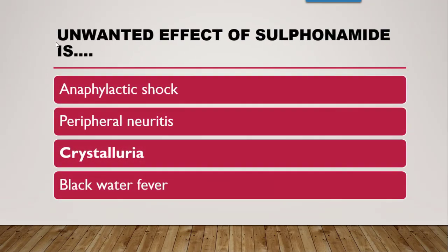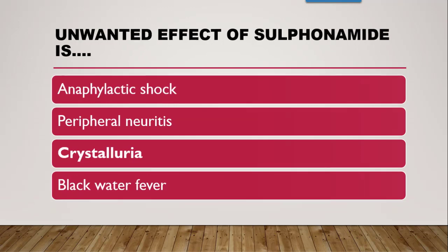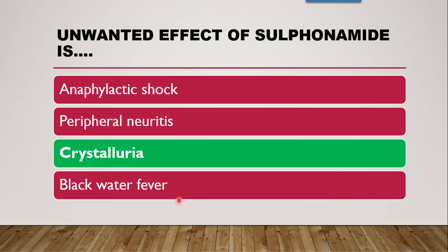Next question: the unwanted effect of sulfonamide — anaphylactic shock, peripheral neuritis, crystal urea, or blackwater fever? The correct answer is crystal urea. When a patient is on sulfonamide therapy, physicians recommend drinking plenty of water to prevent crystal urea formation. Physicians may also prescribe alkaline drugs along with plenty of water to prevent it.